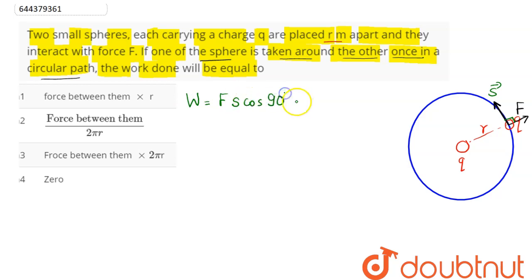we have here as cos 90 degrees. And as we know, cos 90 is 0, so we can say work done will be equal to 0.